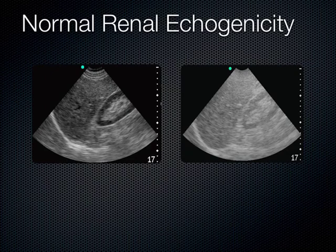Normally the cortex of the kidney is less echogenic than its next-door neighbor — the liver on the right side, or the spleen on the left. Can you make out that the renal cortex is slightly less echogenic than that organ? If you can see that, you can appreciate the subtleties of gain.